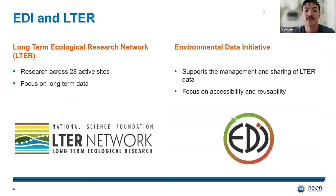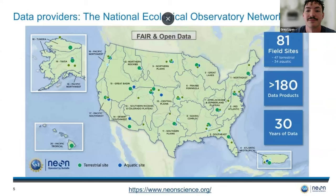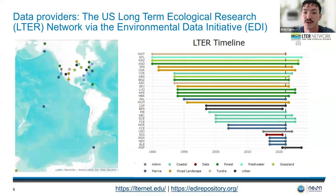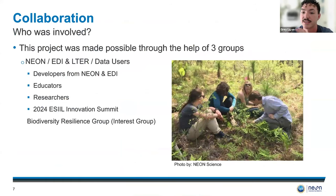To give a brief overview of EDI and LTER: LTER does research across 28 different active sites and their focus is on long-term data. EDI supports the management and sharing of LTER data and focuses on accessibility and reusability. NEON's focus is more on spatial data — sites all across the country — whereas LTER is more focused on temporal data, with data going all the way back to 1980 until now. Having both temporal and spatial data gives us a good idea of the relationships between all these different data from different regions.